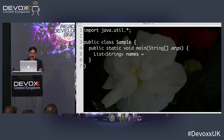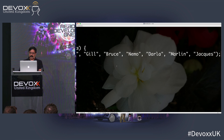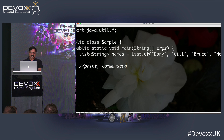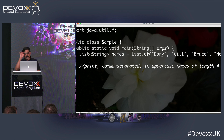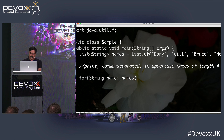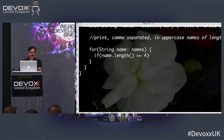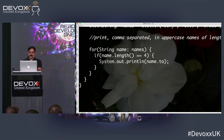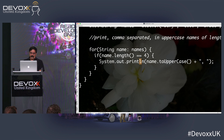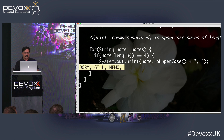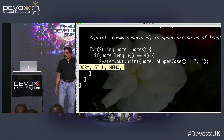Let's say we have a list of names, and the problem is to print comma-separated uppercase names of length 4. We could iterate, check name.length == 4, and print name.toUpperCase() with a comma. But when you run this code, you get the output — and notice there is a stupid comma at the very end. Has anyone seen this problem before? When it happened to you, how did you feel?